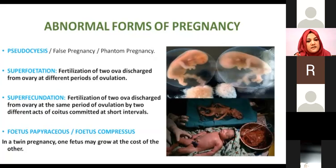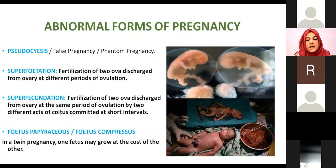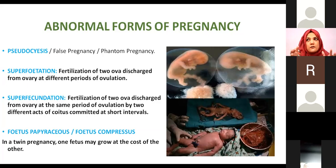Superfecundation refers to fertilization of two ova discharged from the same period of ovulation by two different acts of coitus. This is a case where the female has committed adultery and a twin pregnancy is conceived in which both children have different fathers. At birth, the children will not be identical but fraternal, and may appear different from each other.